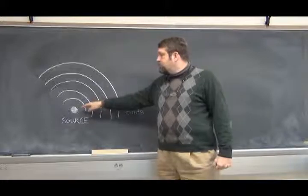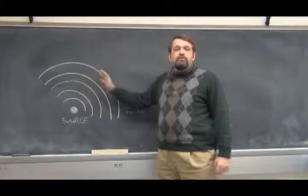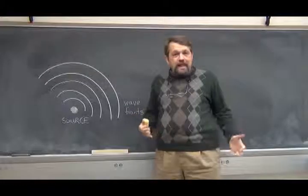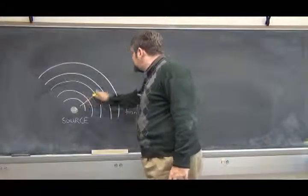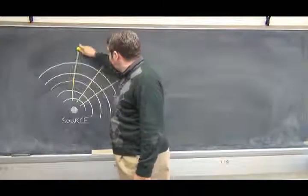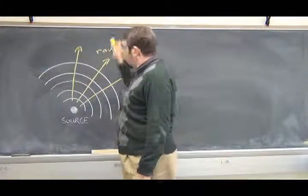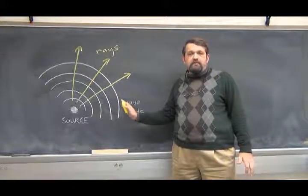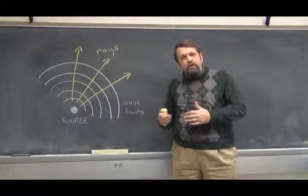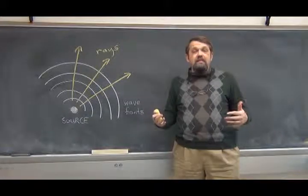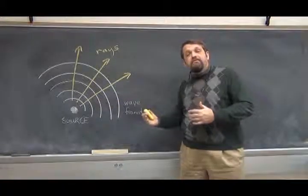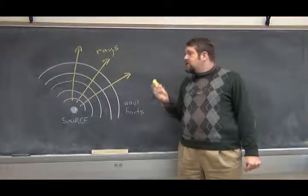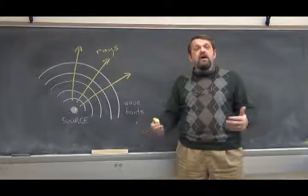The wave is propagating outward from the source, and the wave fronts are concentric spheres around the source. And the light rays, therefore, go in the direction of the propagation of the wave, which means the light rays go straight out from the source. The point here is that the light rays are perpendicular to the wave fronts — that's where the light rays should be drawn. This means that if we have a statement about how the light rays go, we know how the wave fronts are shaped, and vice versa. The light rays point in the direction of the propagation of the wave fronts.